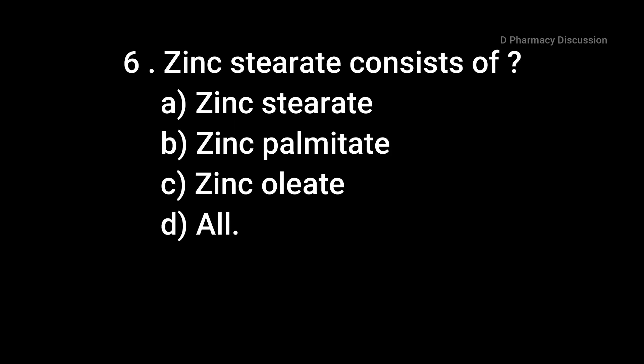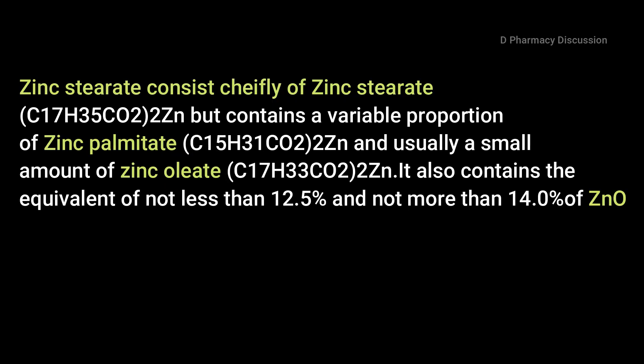Question 6: Zinc stearate consists of — option A: zinc stearate, B: zinc palmitate, C: zinc oleate, option D: all. Correct answer is option D, all. Zinc stearate consists chiefly of zinc stearate but contains a variable proportion of zinc palmitate and usually a small amount of zinc oleate. It also contains the equivalent of not less than 12.5% and not more than 14% of zinc oxide.